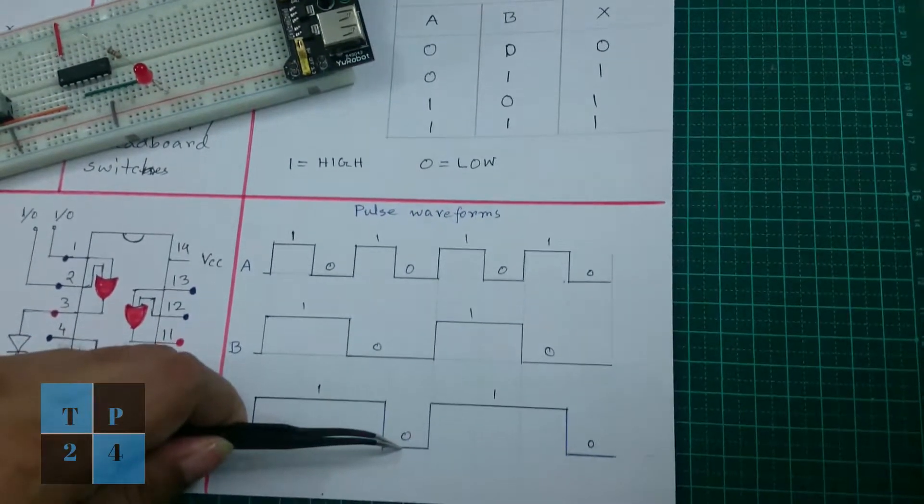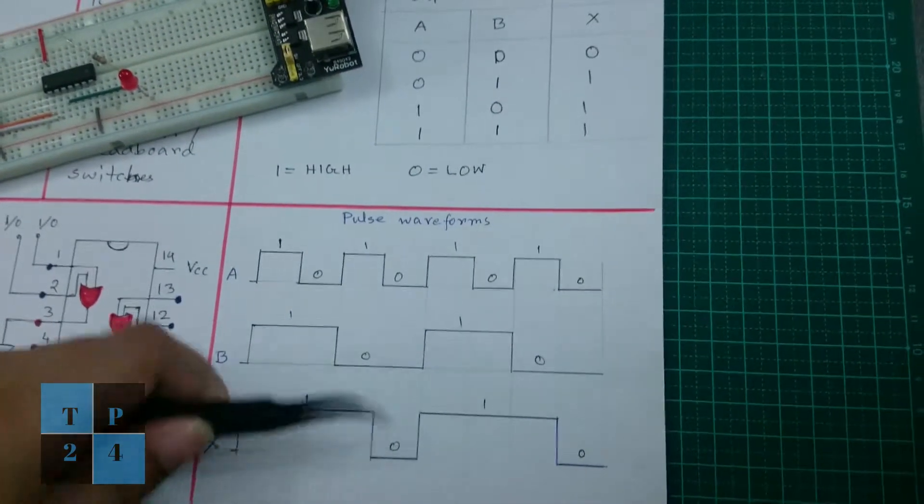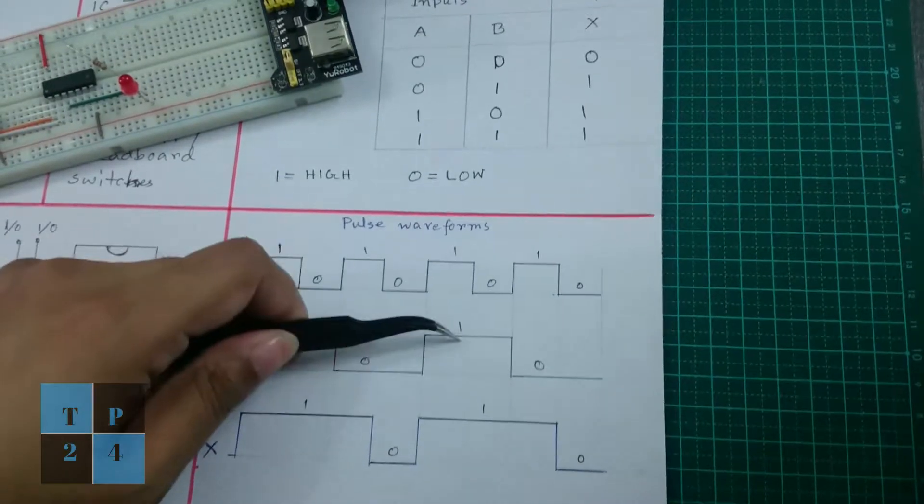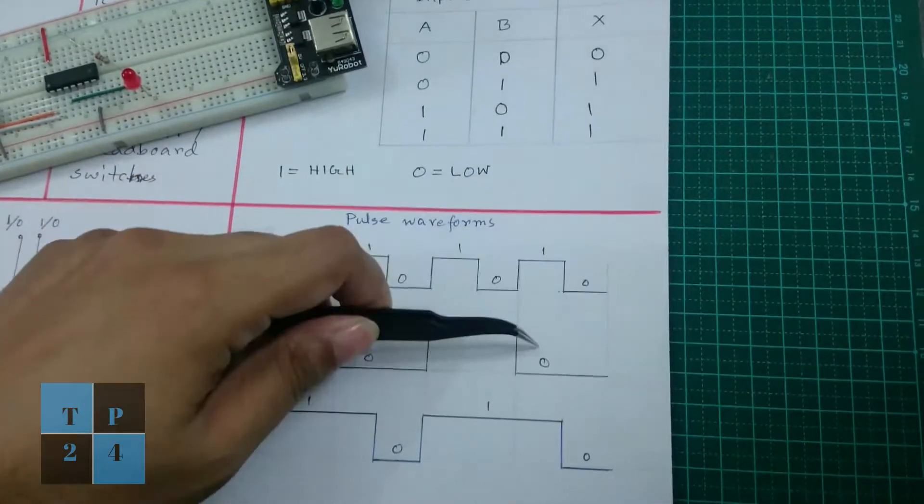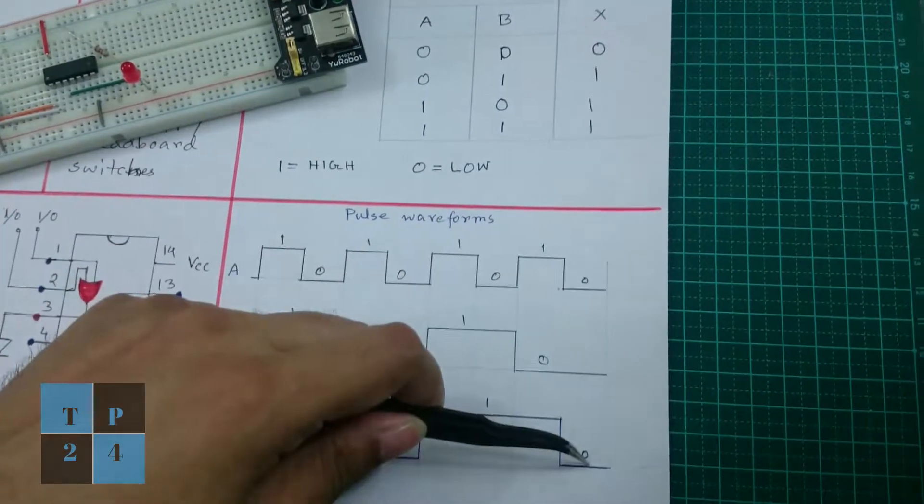So 0 and 0, output is 0. Again, 1 and 1 will give 1, 0 and 1 will give 1, and 1 and 0 will give 1, and 0 and 0 will give you 0. So this pulse waveform again supports the truth table of the OR gate.